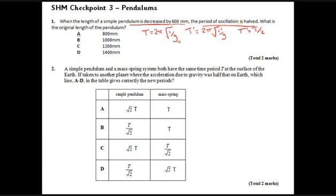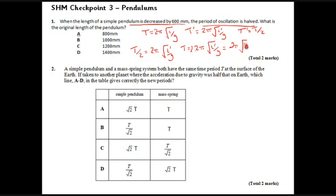We also know that t-dash equals t/2, because the period is halved. So we can write t/2 = 2π√(l-dash/g). Taking the 2 to the top gives t = 2π√(l-dash/g) with a 2 out front. Moving that 2 inside the bracket gives t = 2π√(4·l-dash/g). Comparing this with our original expression, both equal t, so 4·l-dash must equal l.